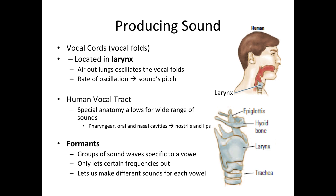Formants act like a filter, only letting certain bands of frequencies through — which is crucial for speech. The length and shape of the vocal tract determine formant characteristics, and these are rapidly modified during speech by movement of our articulators, such as the tongue and lips. Formants essentially emphasize sound frequencies that are meaningful in speech.